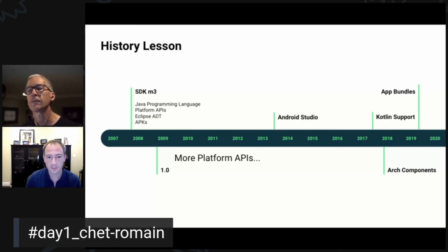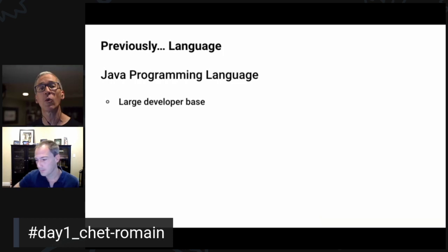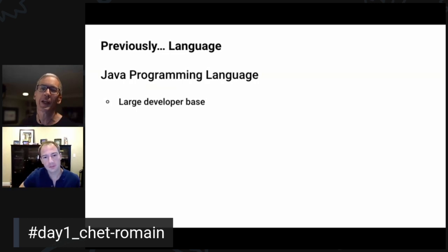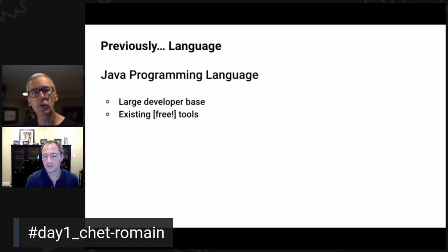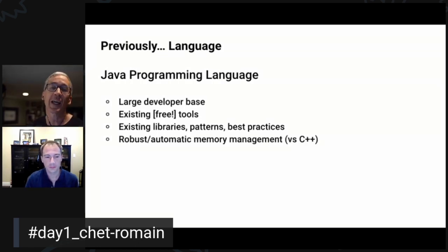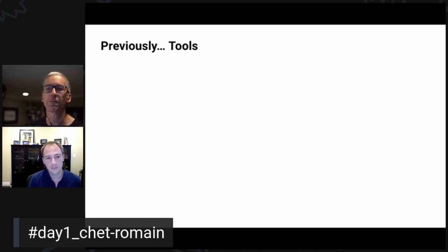We want to talk about some of the fundamental things everybody knew about classic Android development. The Java programming language was chosen for good reasons: a large base of developers already knew it, tools like Eclipse were free and widely used, there were existing libraries and middleware people could continue using, and it had automatic memory management — as opposed to C and C++ native environments many developers were coming from.